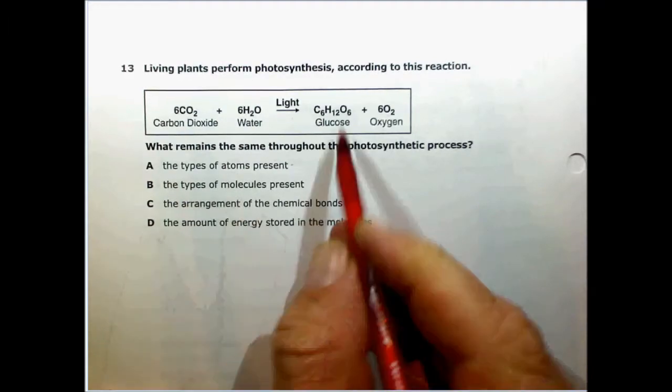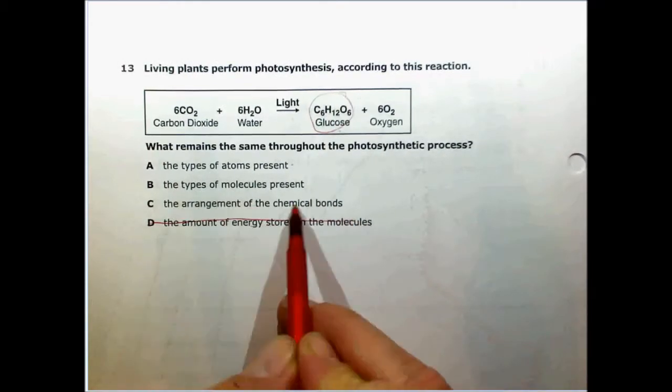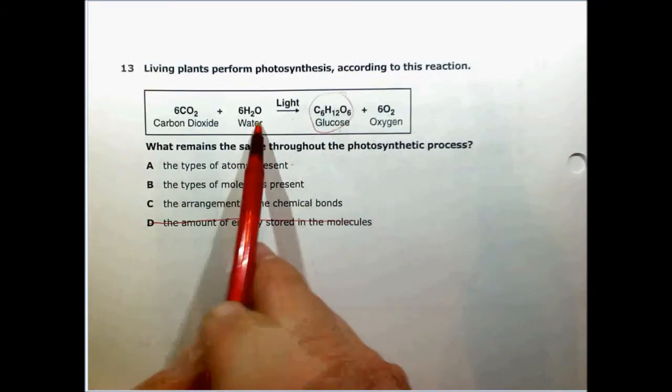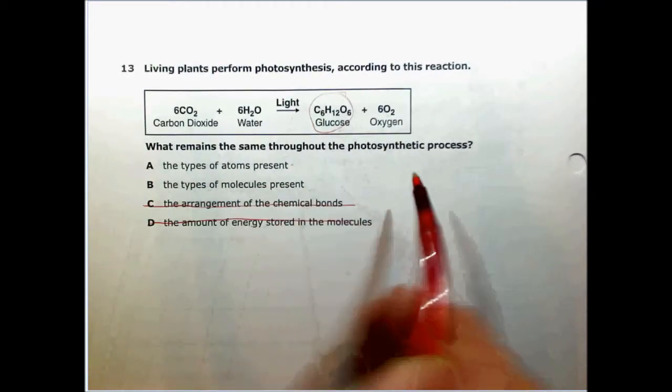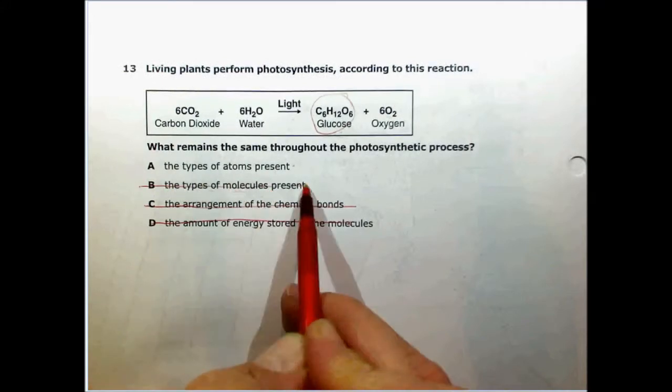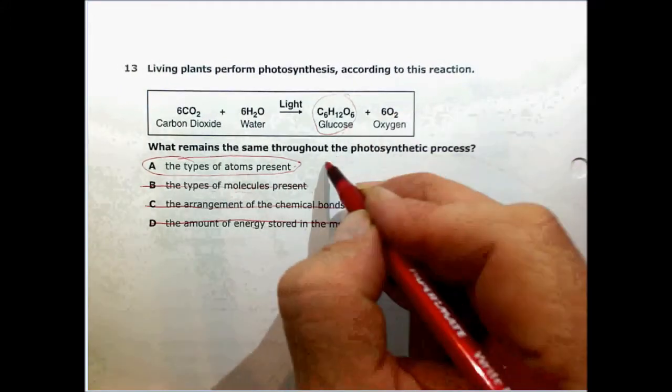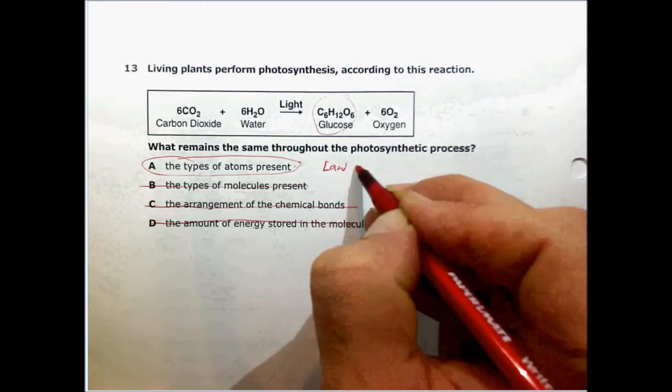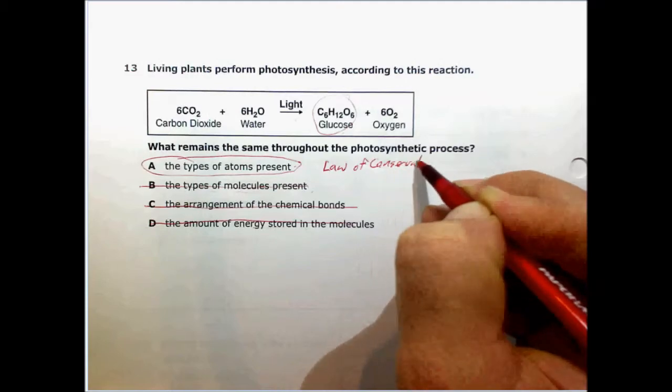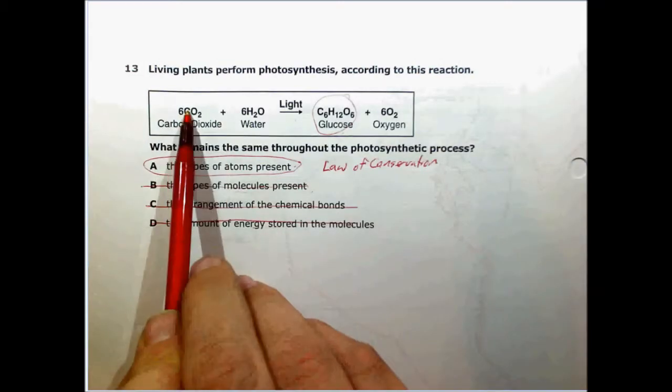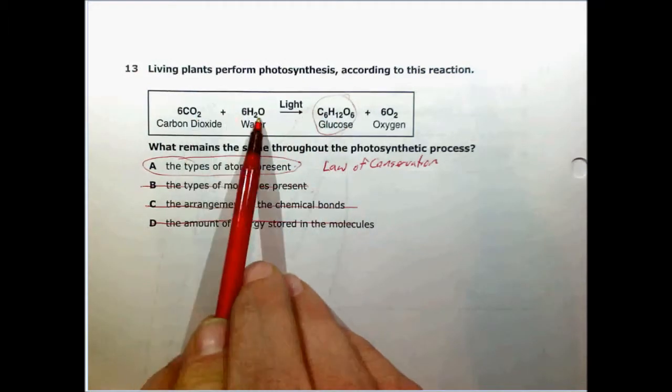The arrangement of chemical bonds? Well, we have different chemicals, so it can't be that one. The types of molecules present? Again, different chemicals. The types of atoms must be the correct answer, and this is based on just the law of conservation. We have carbon atoms on the left and the right, hydrogen atoms on the left and the right, and oxygen atoms on the left and on the right.